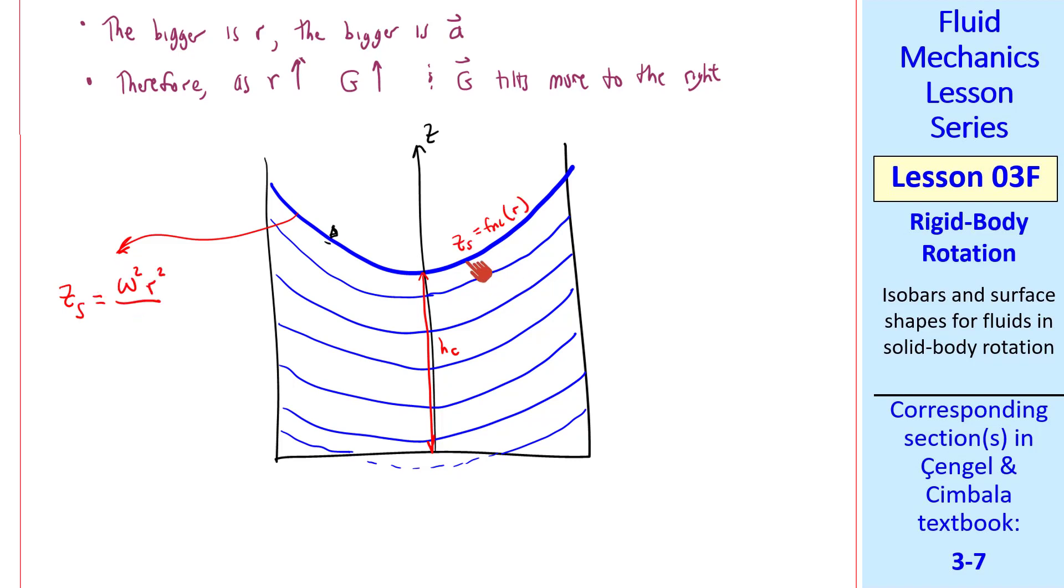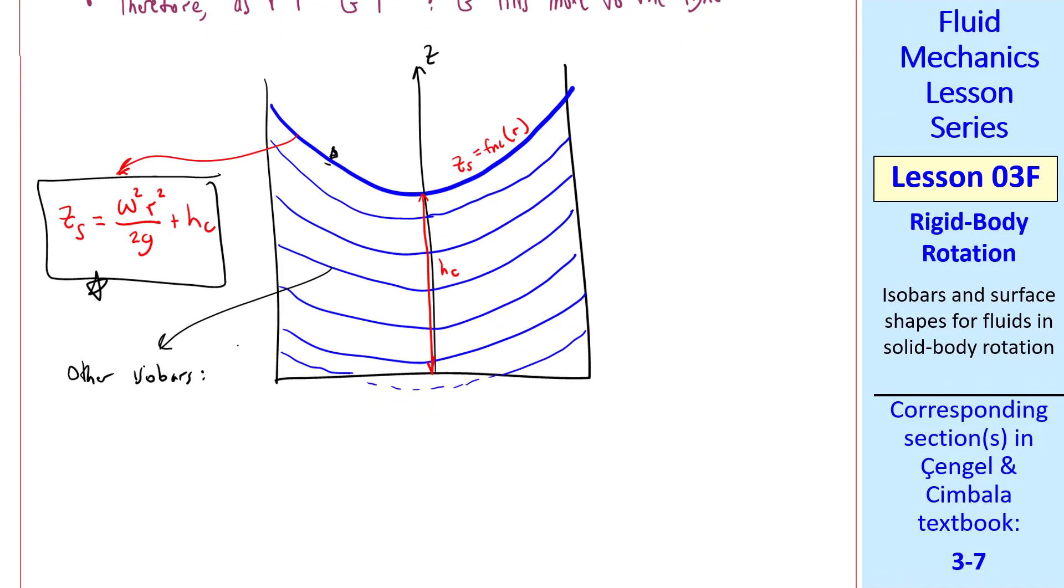It turns out that zs, the equation of the free surface as a function of r, is equal to omega squared r squared over 2g plus hc, where hc is the depth from the center line of the paraboloid to the bottom of the tank. And z here is relative to the bottom of the tank. Any other isobar has the same equation, but it's just shifted downward.